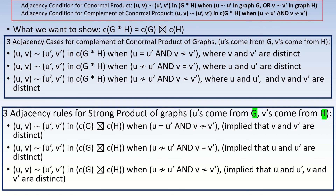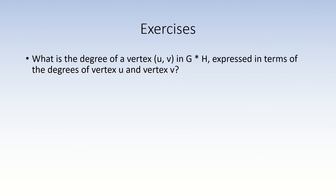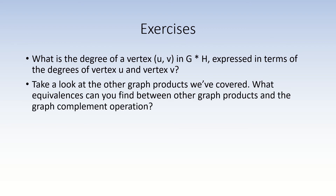Isn't it amazing that the strong product of the complements is the same graph as the complement of the conormal product? As an exercise, what is the degree of a vertex in the conormal product of two graphs, expressed in terms of the degrees of its right and left entries? Feel free to post your answer in the comments. If you found this equality interesting, look for other equivalences between products when applying complementation to their factors or to the product itself — there are a lot of neat equivalences out there to be found.